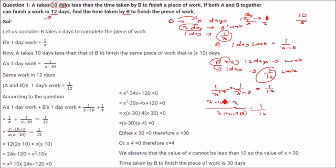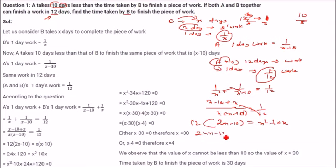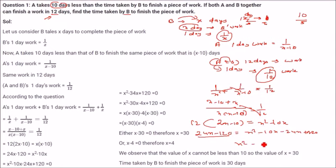So X and X gives 2X minus 10. Bring 12 here and take this across. This will be X squared minus 10X. So what do you get? 12 into 2 is 24X minus 120 equal to X squared minus 10X. Bringing these two here, that will be minus 24X plus 120. So X squared minus 10 minus 24 is minus 34X.